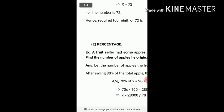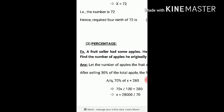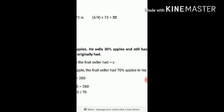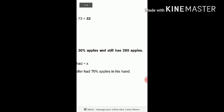Next is percentage. Percentage means divided by 100. Suppose 10 percent means 10 by 100. Now we have an example: a fruit seller had some apples. He sells 30% of the apples, so 70% of the apples remain. If 70% of the apples is 280, we need to find the total number of apples he initially had.